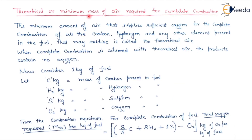Theoretical or minimum mass of air required for complete combustion: the minimum amount of air that supplies sufficient oxygen for the complete combustion of all the carbon, hydrogen, and any other element present in the fuel that may oxidize is called the theoretical air. This is the simple definition — the amount of air required for complete combustion of a fuel is called the theoretical air or minimum air.